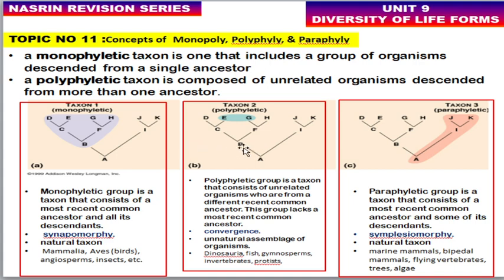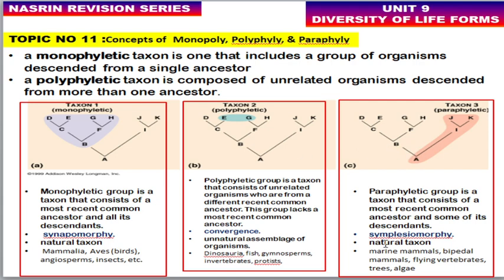In a monophyletic group, all descendants and the most recent common ancestor are included. In a polyphyletic group, the recent common ancestor is excluded. The third division is the paraphyletic group — a taxon that consists of the most recent common ancestor and only some of the descendants. The monophyletic taxon is grouped based on synapomorphy; the polyphyletic group is based on convergent evolution; and the paraphyletic group is based on symplesiomorphy. Monophyletic and paraphyletic groups are naturally accurate taxa, whereas the polyphyletic group is an unnatural assemblage.